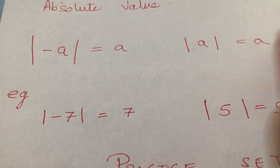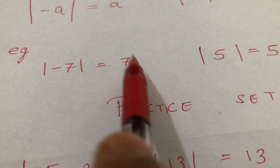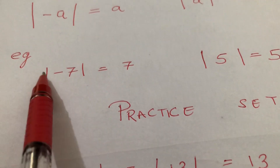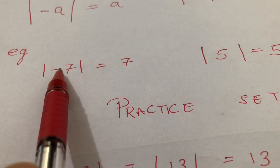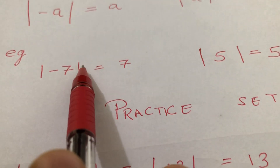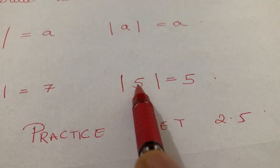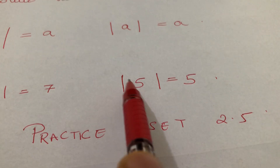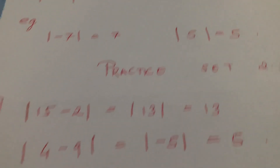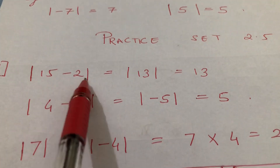For example, mod of minus 7 is 7. When the mod sign goes away, the minus sign — if it is there — will go away. If it is not there, the value remains the same. For example, mod of 5 is 5.